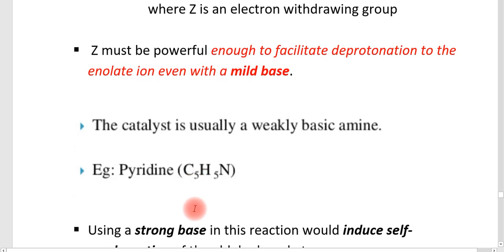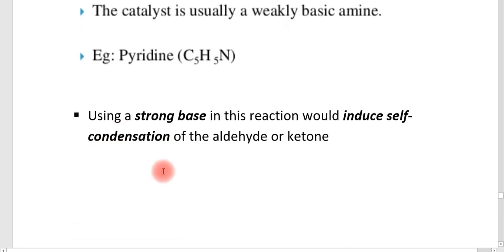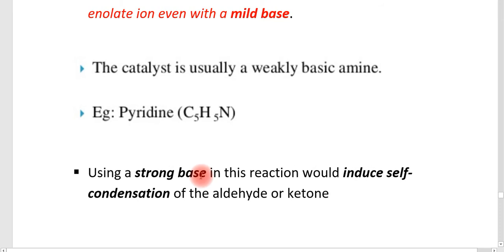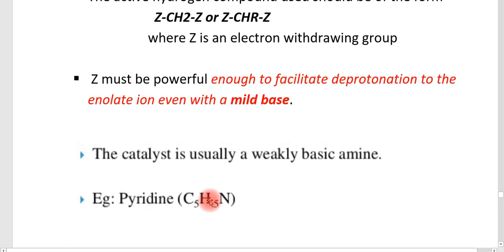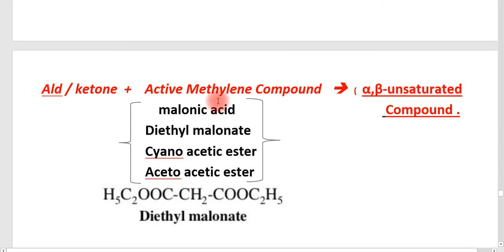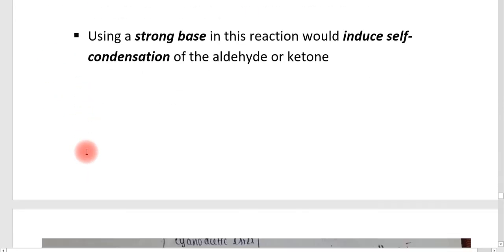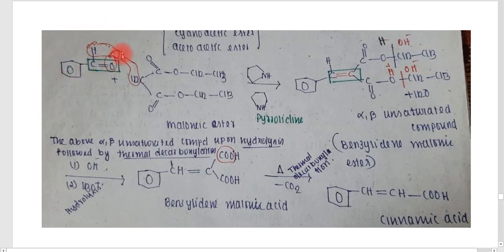The catalyst used in the Knoevenagel condensation is a weakly basic amine — for example, pyridine or pyrrolidine. A strong base must not be used because it would induce self-condensation of the aldehydes or ketones. Since we want the reaction between the active methylene compound and the aldehyde or ketone — not self-condensation — a weak base is used. The example shown is benzaldehyde reacting with malonic ester, which contains the CH₂Z active methylene unit with two Z groups.